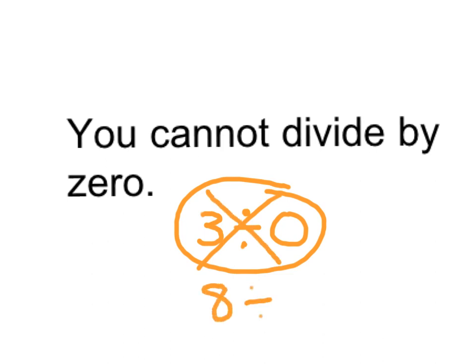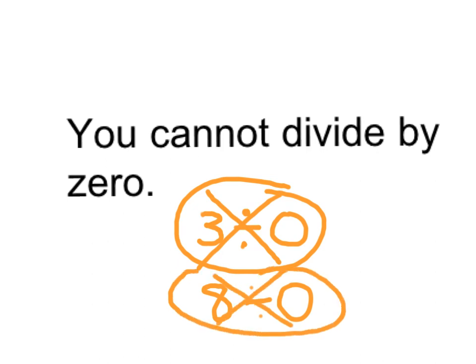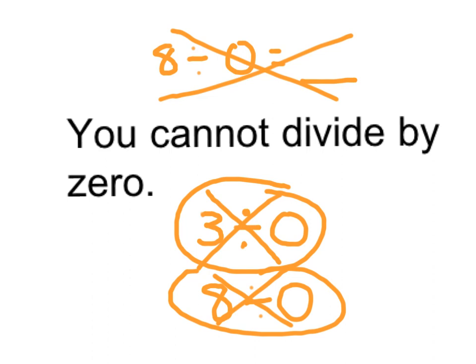8 divided by 0 — you cannot do it. So if you come up with a problem that says 8 divided by 0 equals blank, at that point you have to write: can't divide by 0. Just write it out. Can't divide by 0. This is one of the rules of division.